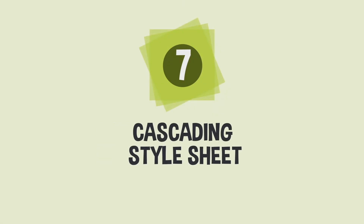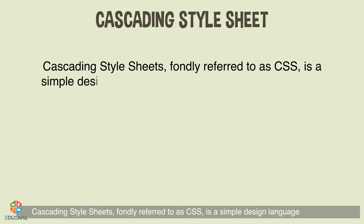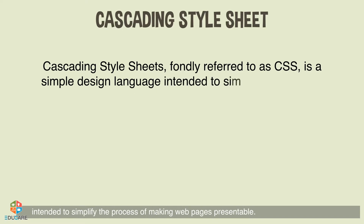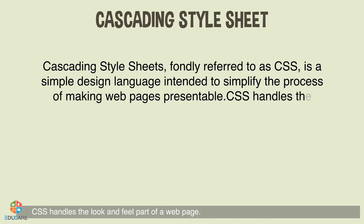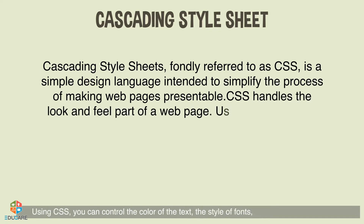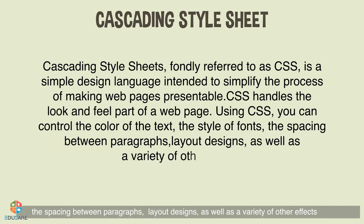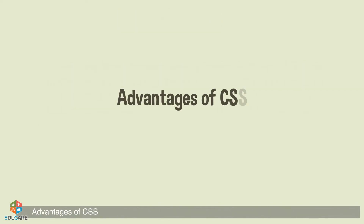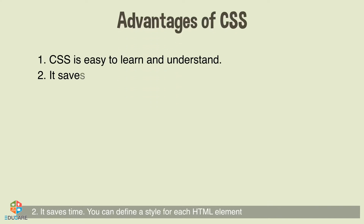Chapter 7: Cascading Style Sheets. Cascading Style Sheets, fondly referred to as CSS, is a simple design language intended to simplify the process of making web pages presentable. CSS handles the look and feel part of a web page. Using CSS, you can control the color of the text, the style of fonts, the spacing between paragraphs, layout designs, as well as a variety of other effects.